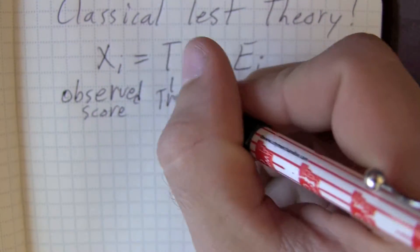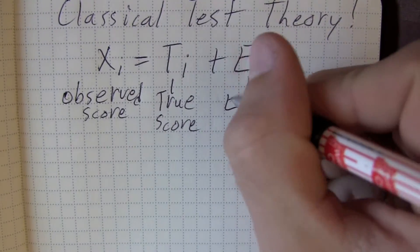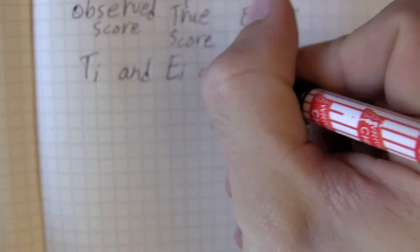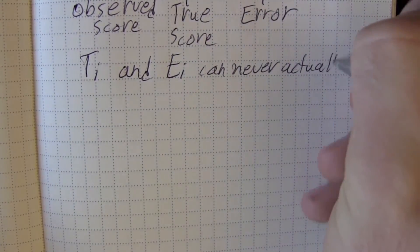The observed score equals the true score plus error. True scores and error are kind of like unicorns. You know they exist, but you can't actually see them.